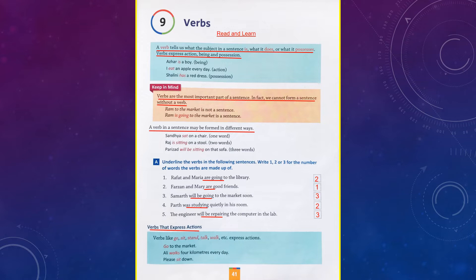A verb in a sentence may be formed in different ways. A sentence can have one verb, two verbs, or three verbs depending upon the tense — the timing that you as a writer want to show. Exercise A asks you to underline the verbs in the following sentences and write one, two, or three for the number of words the verbs are made up of. You first have to underline the verbs in the sentence and then in the box nearby write how many verbs that sentence has.